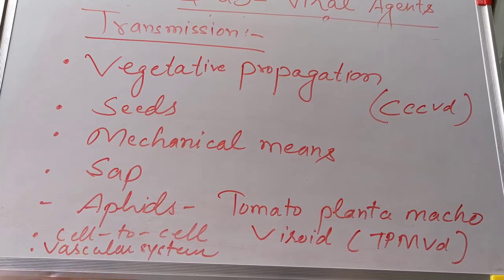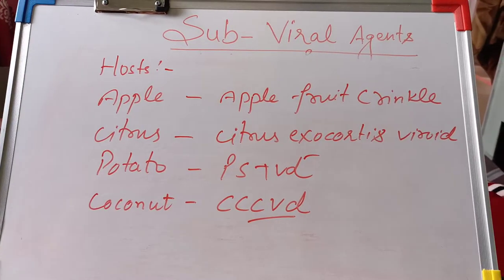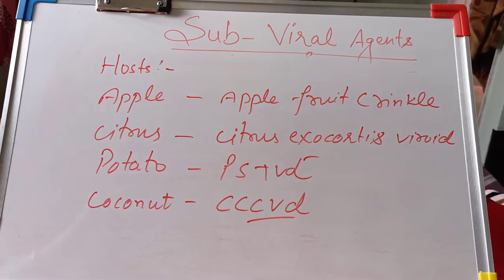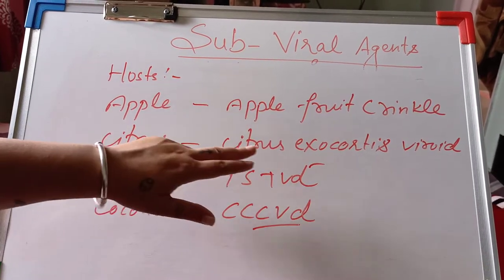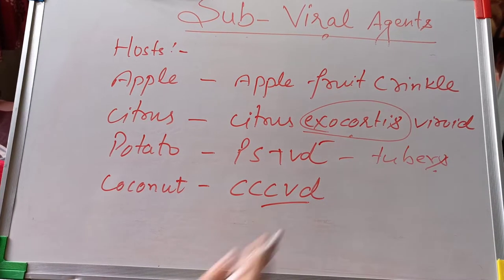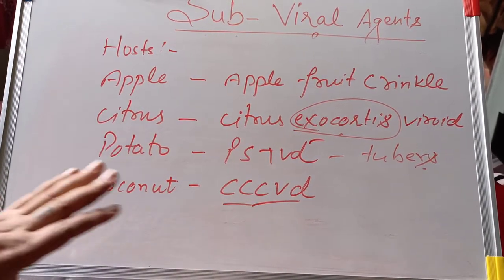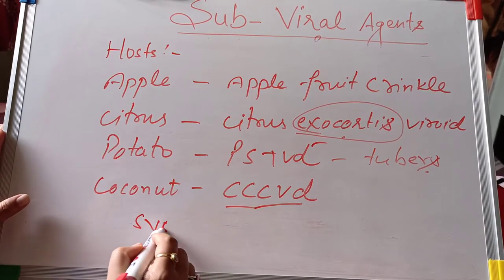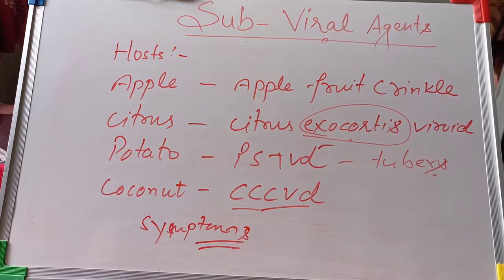An important example is the Coconut Kadang-Kadang Viroid, which mainly affects coconut palms. Viroids can affect a large range of hosts. Apple fruit crinkle is caused by the Apple Fruit Crinkle Viroid. Citrus exocortis viroid affects the bark of citrus plants like lemons. Potato Spindle Tuber Viroid infects tubers of potato plants. Coconut palms are affected by the Coconut Kadang-Kadang Viroid. Notably, some viroids show symptoms in the host, while other viroids will not produce any kind of symptoms.